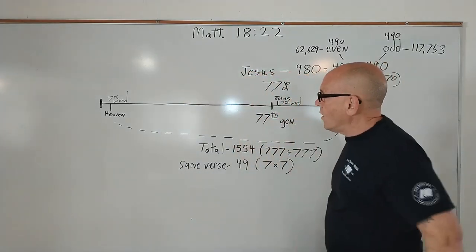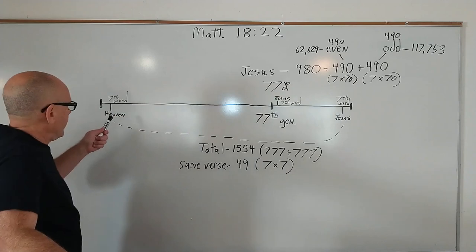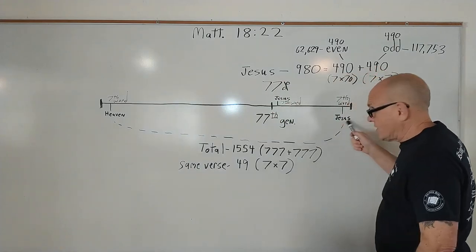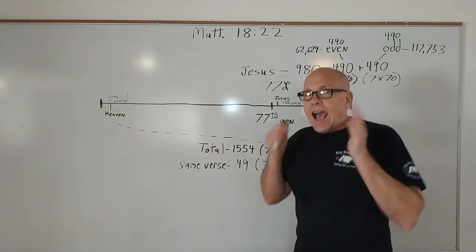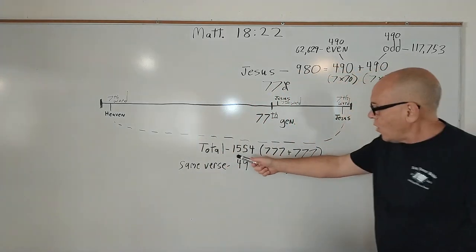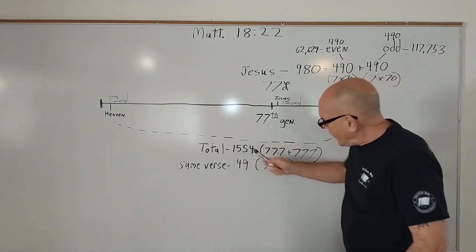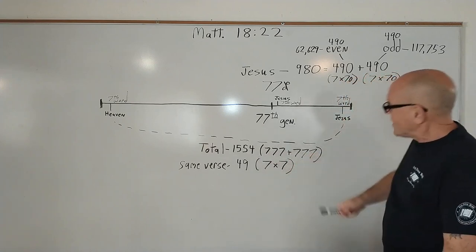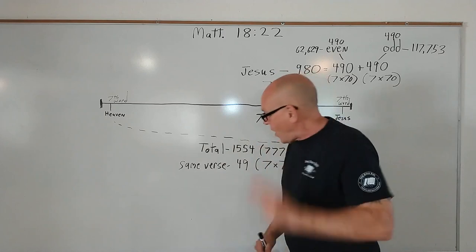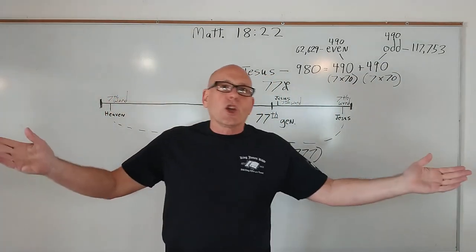I'll give you one more. Seventh word from the beginning of your Bible is heaven. Seventh word from the end of your Bible is Jesus. So now you add up how many times you find the word heaven and the word Jesus in the whole Bible and you're going to get a total of 1,554 times. What is 1,554? That's 777 plus 777. You add up the number of times that heaven and Jesus are in the same verse and that's 49 times and that's 7 times 7. Just a coincidence I'm sure.